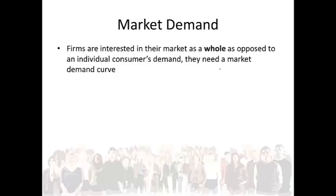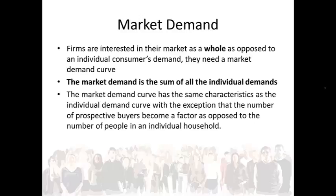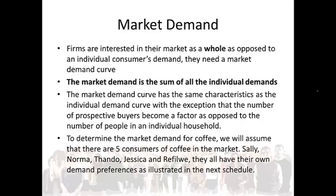Firms are interested in their market as a whole, as opposed to the individual consumer's demand — they need a market demand curve. The market demand is the sum of all the individual demands. The market demand has the same characteristics as the individual demand curve, with the exception that the number of prospective buyers becomes a factor, as opposed to the number of people in an individual household. To determine the market demand for coffee, we will assume that there are five consumers of coffee: Sally, Norma, Tando, Jessica, and Rufiwe. They all have their own demand preferences, as illustrated in the next schedule.